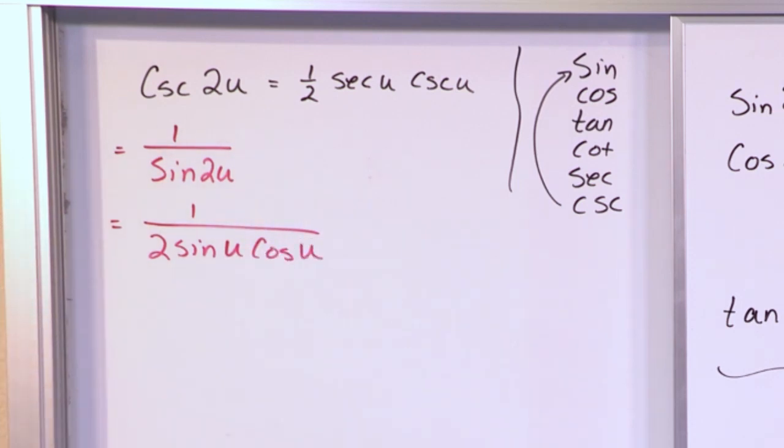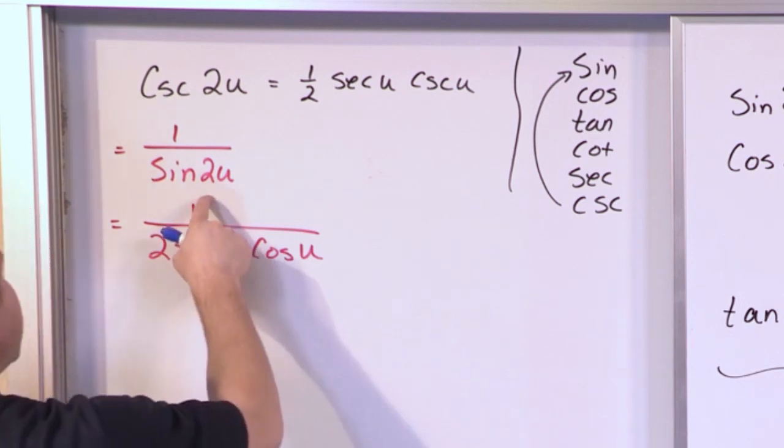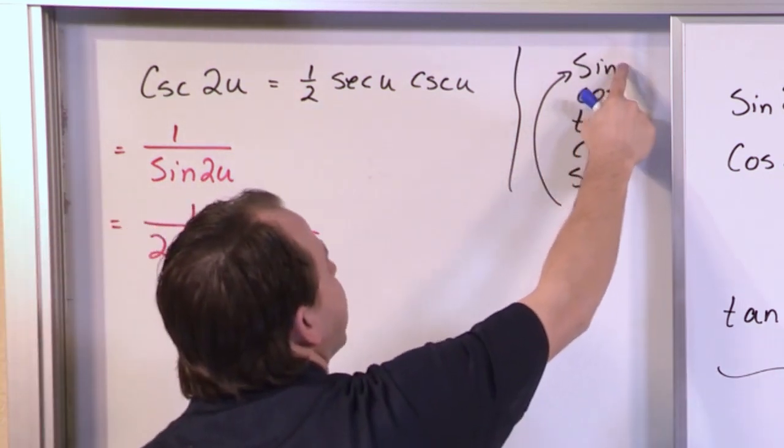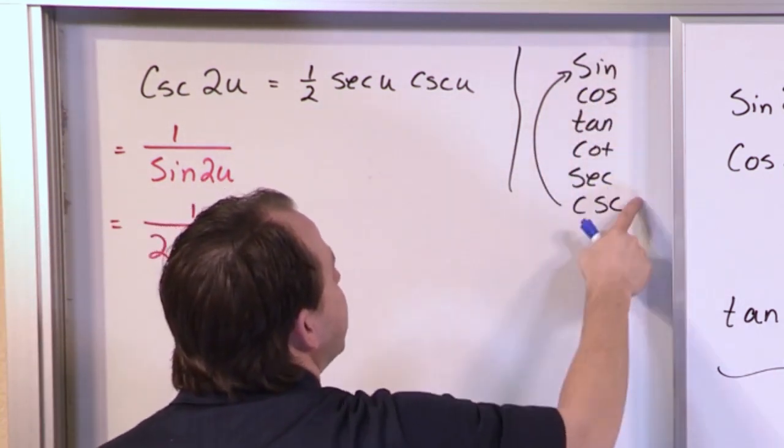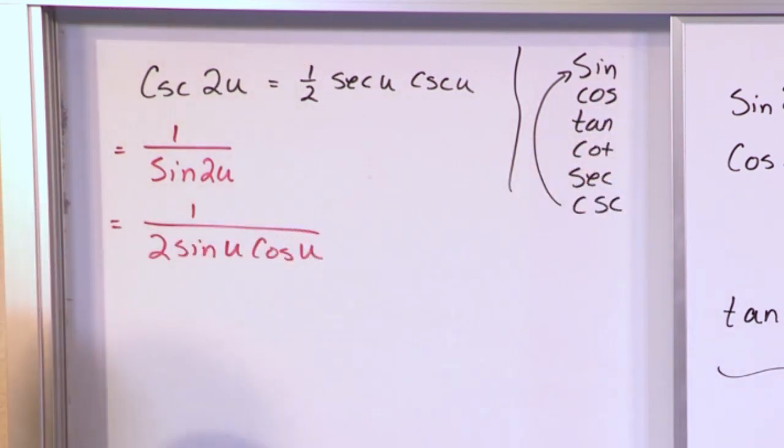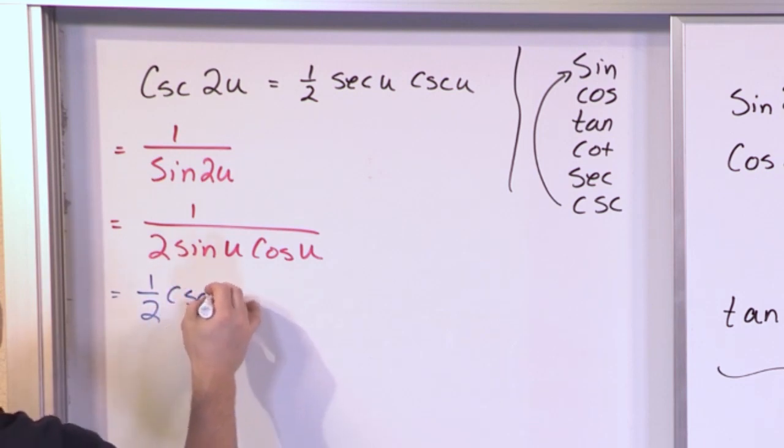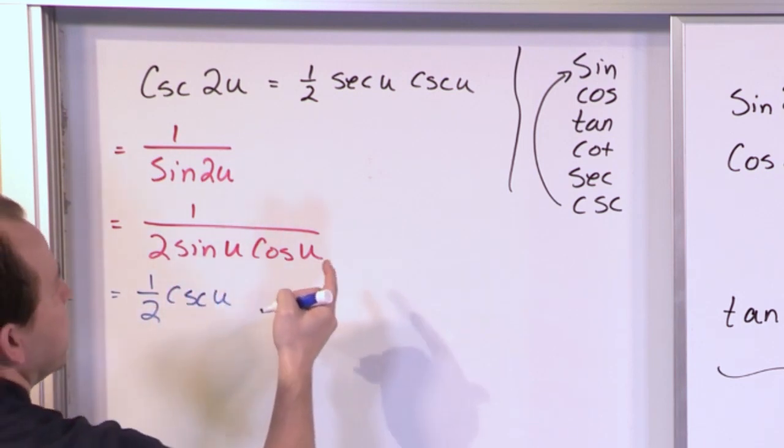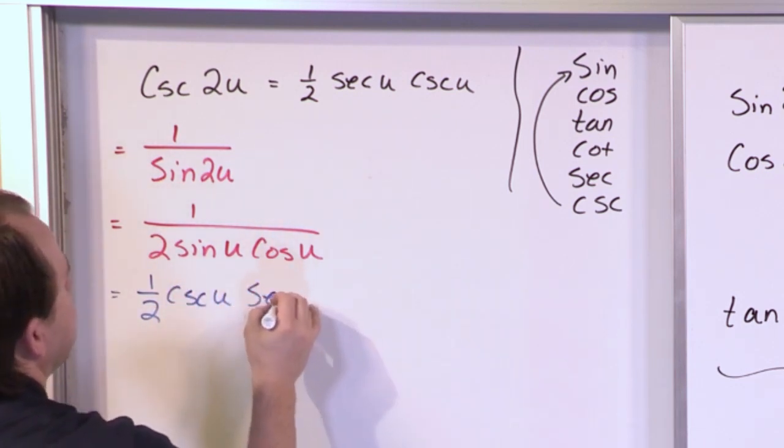Now we're getting somewhere because we see that 1 over sine corresponds to cosecant. 1 over cosine corresponds to secant. So what we have here is exactly what we wanted. We have 1 half that comes from this. 1 over sine gives us the cosecant u. 1 over cosine gives us the secant of u.